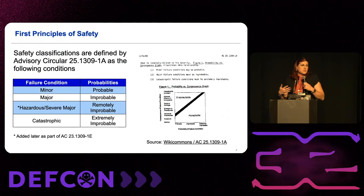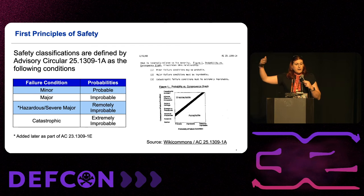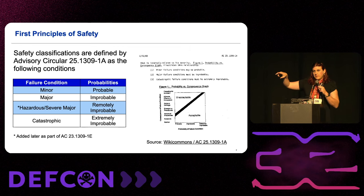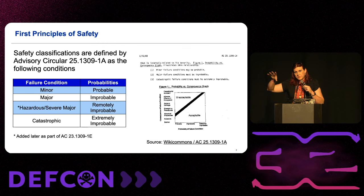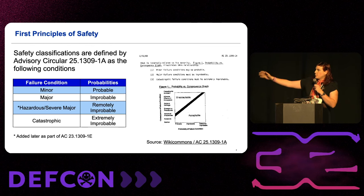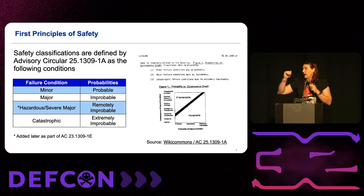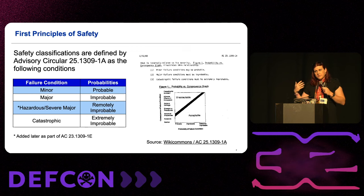The first principles of safety that we have to talk about are failure conditions and probabilities. All of this information comes out of Advisory Circular 25 or 23. Advisory Circular 25-1309-1A — this is all public information — actually lays out all these probabilities and puts together a really nice graph of probability versus consequence. So you have probable, improbable, and extremely improbable, as well as an acceptability of those failures and faults.